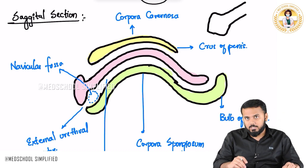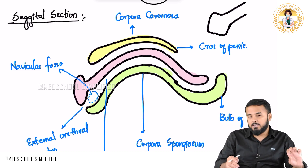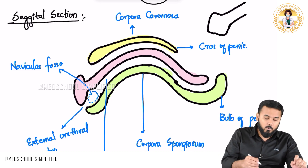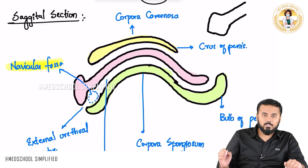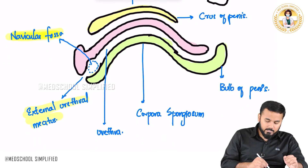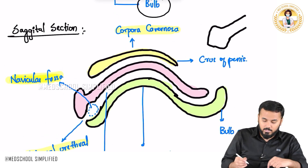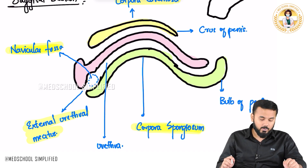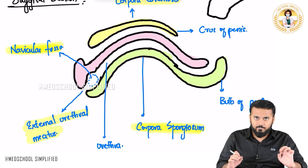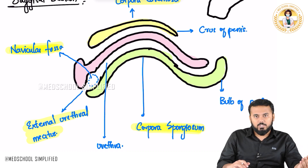These are the structures you would find when looking at the sagittal section. If they give you such a picture and point at any structure, you should be able to answer. This is all you need to know regarding the sagittal section of the penis. Thank you so much for watching. Goodbye.